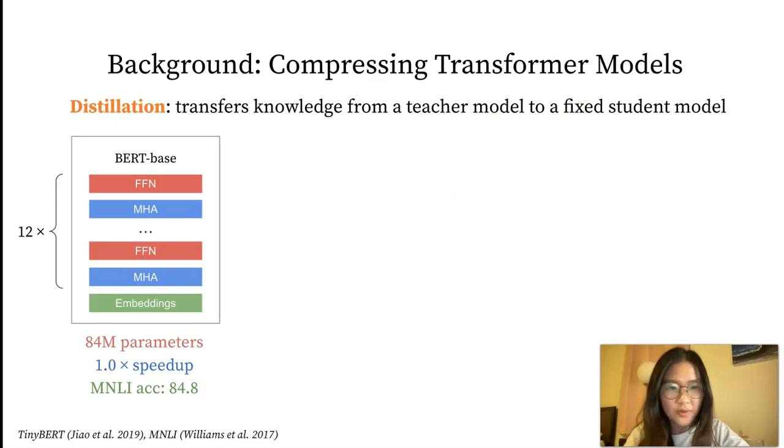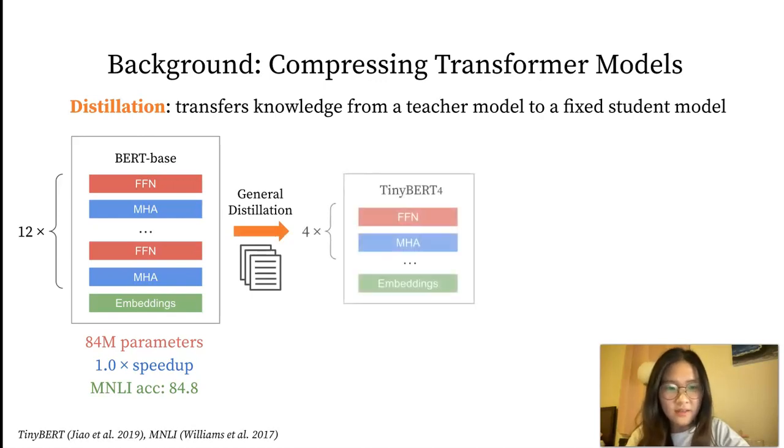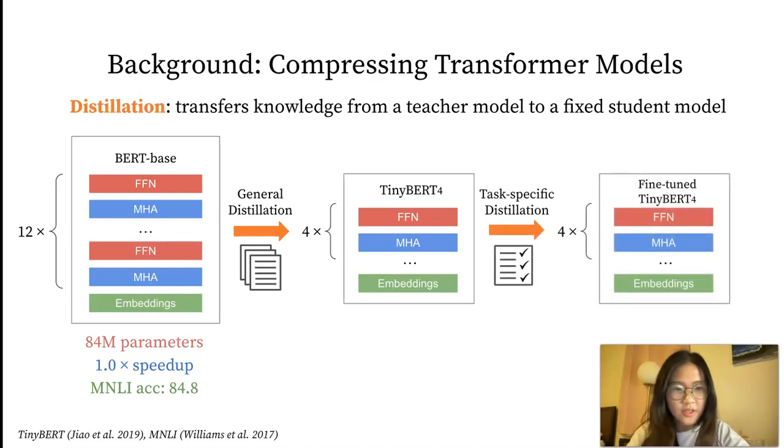Knowledge distillation is one of the predominant approaches for model compression, which transfers knowledge from a teacher model to a fixed student model. Take Tiny BERT for example. Tiny BERT 4 consists of four transformer blocks and is distilled with unlabeled corpus first and then distilled with task-specific data from a full-size fine-tuned model. After these two steps of distillation, the final model can achieve over 10 times inference speedup compared to the BERT-based model and achieve a 78.7 accuracy on MNLI.